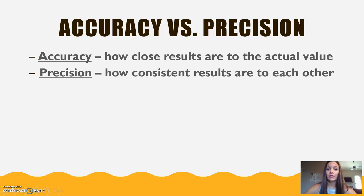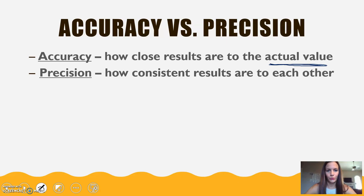Accuracy is how close the results are to the actual value — what should the value be and how close are we to it. Precision, on the other hand, is just how consistent the results are to each other. So if you're doing a lab and you keep getting measurements that are way off from what you should be but they're consistent, then you would be precise.